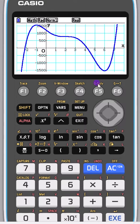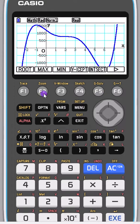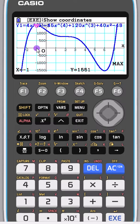Let's find our maximum value. Press graph solve, press maximum, and it finds the maximum value is x equals minus 1 when y equals 1551.